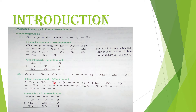Horizontal method mein: pehle bracket mein minus 3a plus 6b minus 5 likhen, phir plus ka sign, phir doosri expression (a plus b plus 3) bracket mein, phir plus ka sign, aur teesri expression (9a minus 2b minus 7) bracket mein.